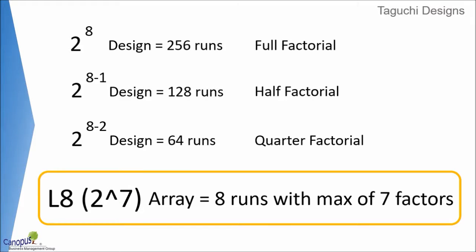We are going to talk about the notation used in Taguchi designs. Two to the power eight in a full factorial design means we have eight factors tested at two levels, which accounts to a total of 256 experiments.